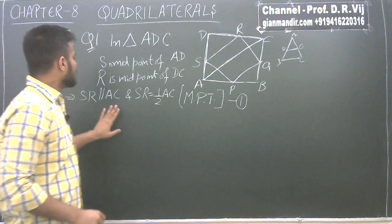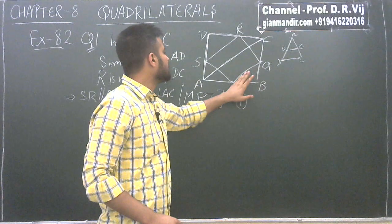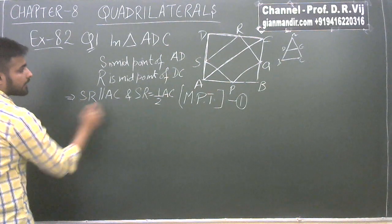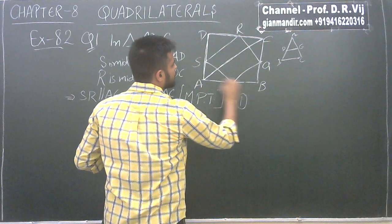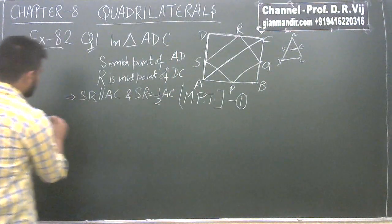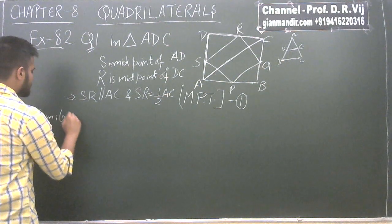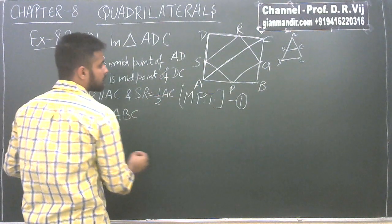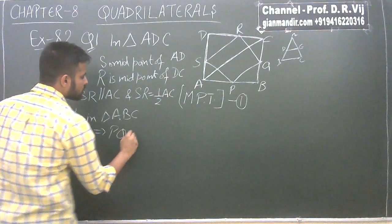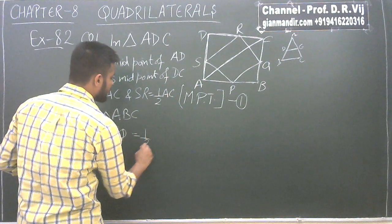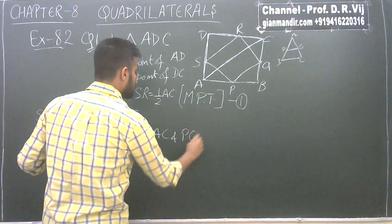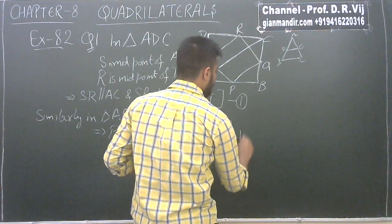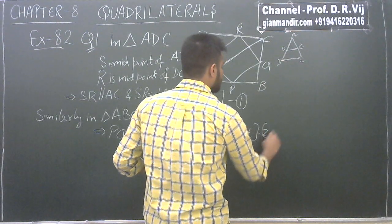The first part has been proven. In the second part, we have to prove that PQ is parallel to SR. How to do that? Similarly, in triangle ABC, we can say that PQ is equal to half of AC and PQ is parallel to AC, by the midpoint theorem (MPT). We will take this as statement 2.